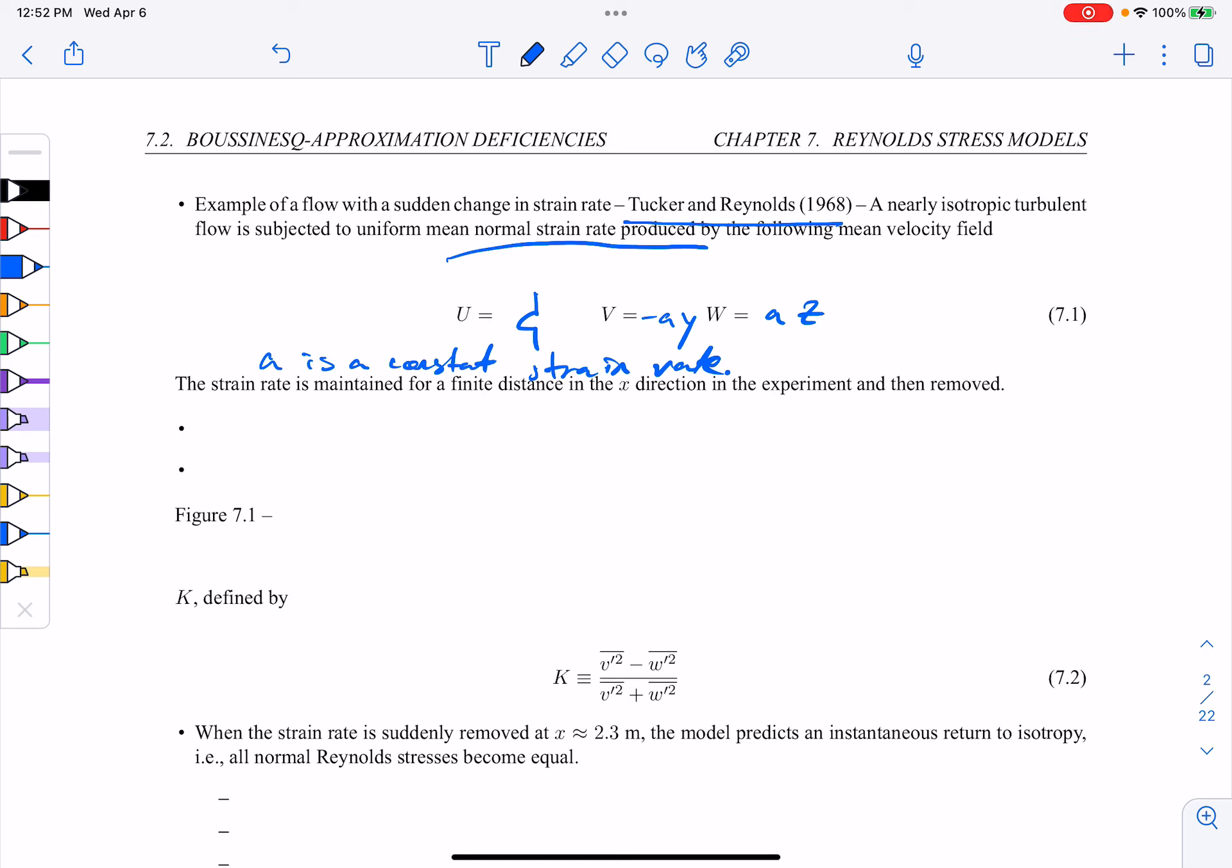So here the turbulence will become anisotropic as the result of uniform straining and it'll gradually approach isotropy downstream. We'll celebrate return to isotropy later.